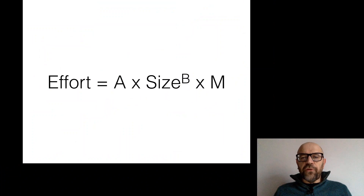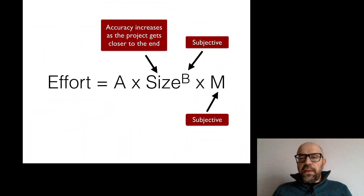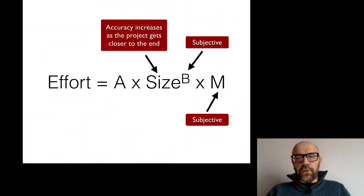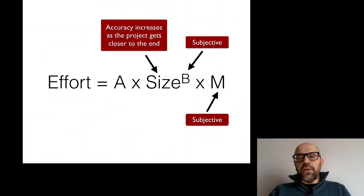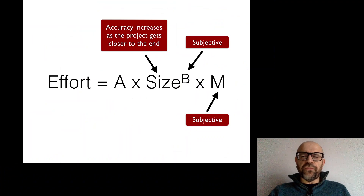A problem with this formula is that the constants are subjective values. You need to compare your project to existing projects in the database and say whether your value of m is low, medium, or high — so in some sense you are comparing against the projects that were used to define the formula. There is another problem: the databases used to define these formulas were quite small and did not include enough diverse projects, so the final results are not really reliable.